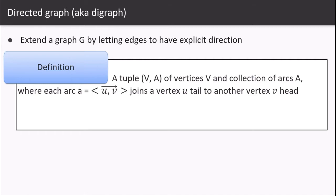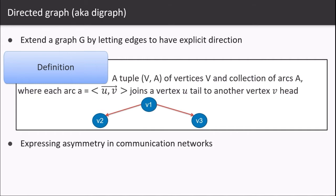It can represent asymmetry in social relationships like Alice likes Bob but Bob does not like Alice. Also representing asymmetry in communication networks and family networks like this is the child of this parent and that parent is the child of that grandparent.